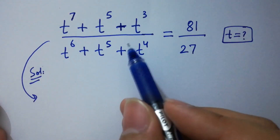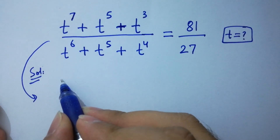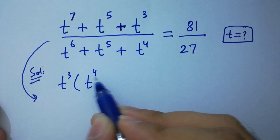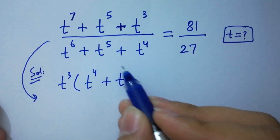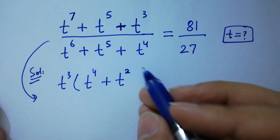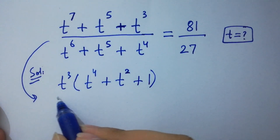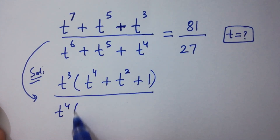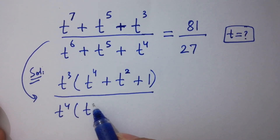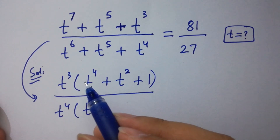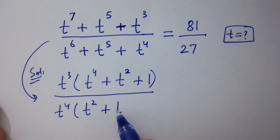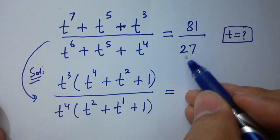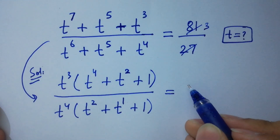To solve this, in the numerator, t cubed can be common: t cubed times t to the power 4 — because 4 plus 3 is 7 — plus t squared — because 3 plus 2 is 5 — plus 1. In the denominator, t to the power 4 can be common: t to the power 4 times t squared plus t plus 1. And 81 over 27 equals 3.